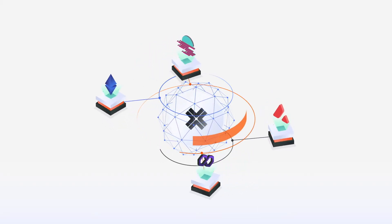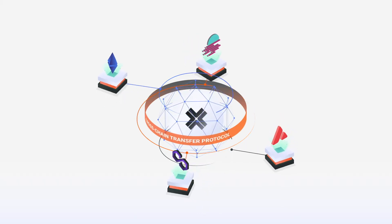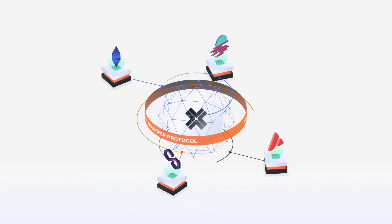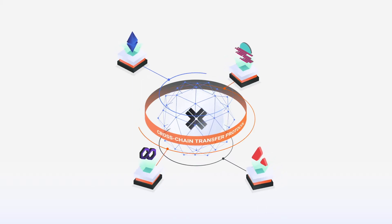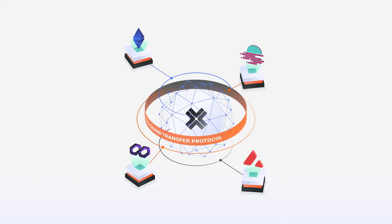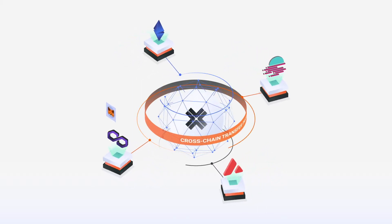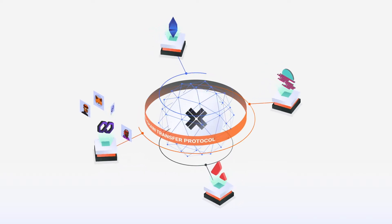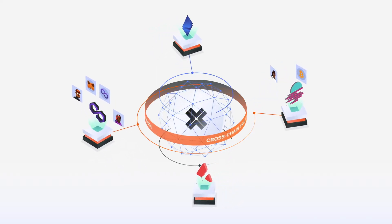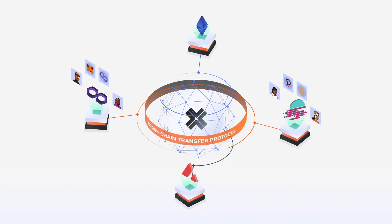The overlay network supports asset transfer, composability of applications, and generalized message passing across any blockchain ecosystem through protocols and APIs. This means developers can build their applications on one blockchain and allow their users to interact with assets, users, and dApps on any other blockchain.